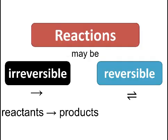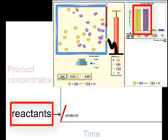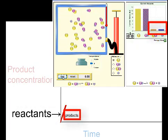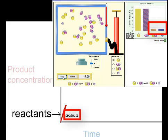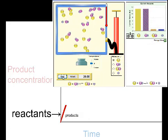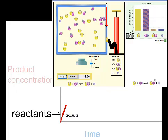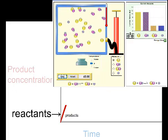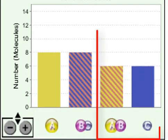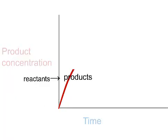In the section on equilibrium, we focus on reversible reactions. Right, so we start off with a lot of reactants but not many products. Low product concentration. As time passes, of course, the reaction is now happening towards the right. The reactants are changing into products.